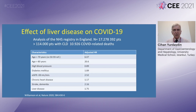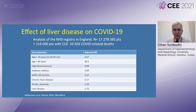This study showed early on that old age is a very significant contributor to mortality, but it also showed that comorbidities such as diabetes, chronic kidney disease, chronic heart disease, stroke, and liver disease contribute to the severity of COVID-19 disease and mortality.